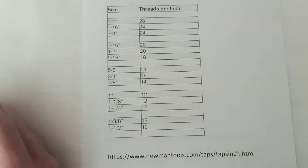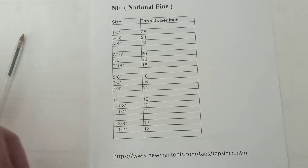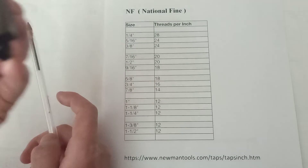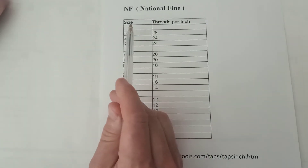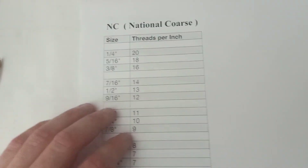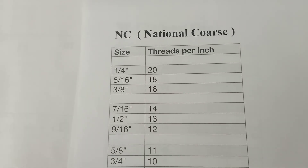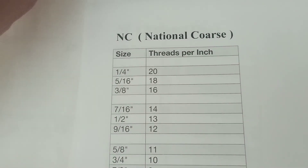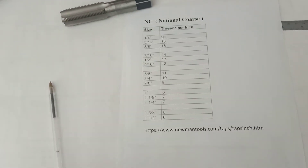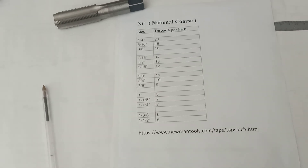So that's the difference. All you do is take the diameter of the tap and look it up. For example, with National Fine, a quarter-inch diameter tap should have 28 threads per inch. If it's a quarter inch and National Coarse, it would have 20 threads per inch. The only difference is threads per inch, and to find out if it's coarse or fine, just look at a table — which you can find on Newman Tools or anywhere else on the internet. Thank you very much.